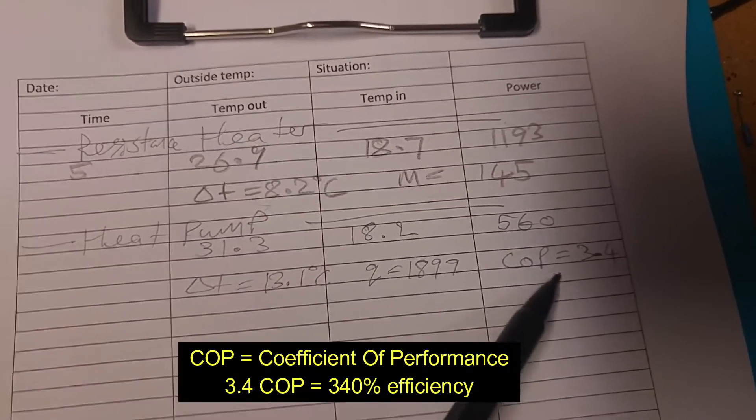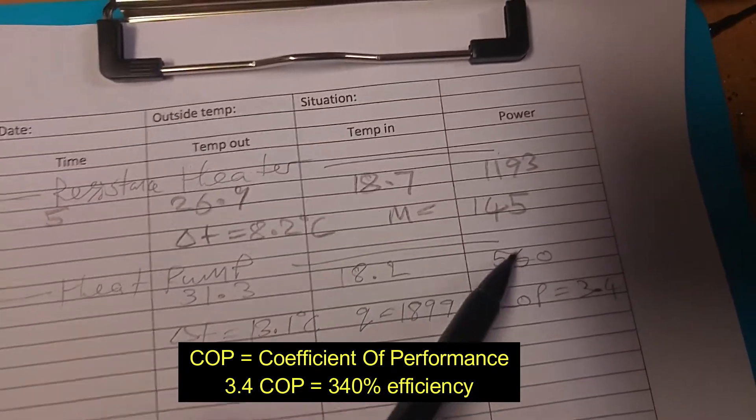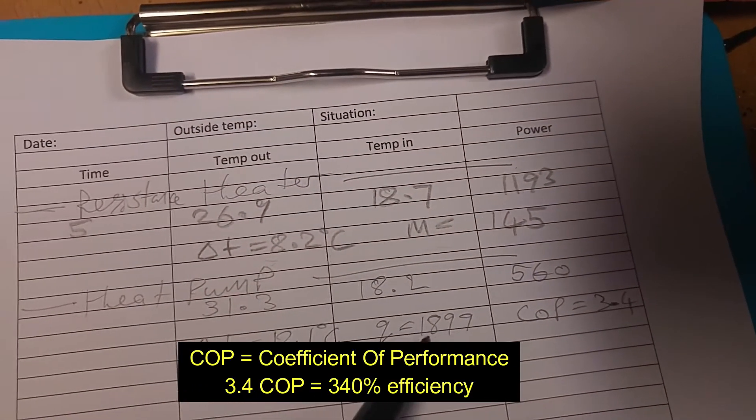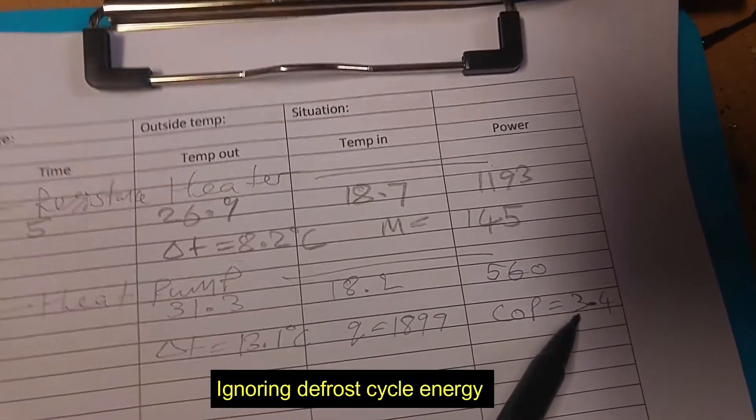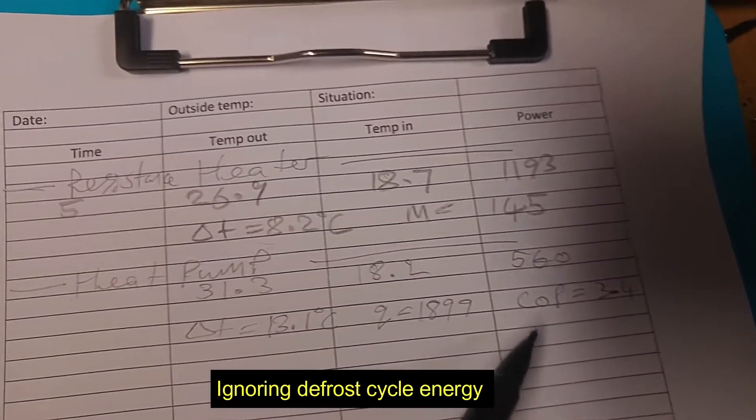So then to get the COP, you have to divide that by the electrical consumption. And then the result is 3.4, which is pretty good.